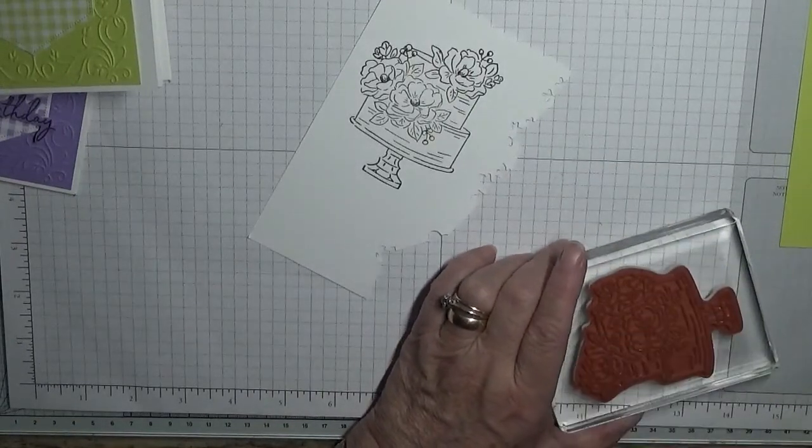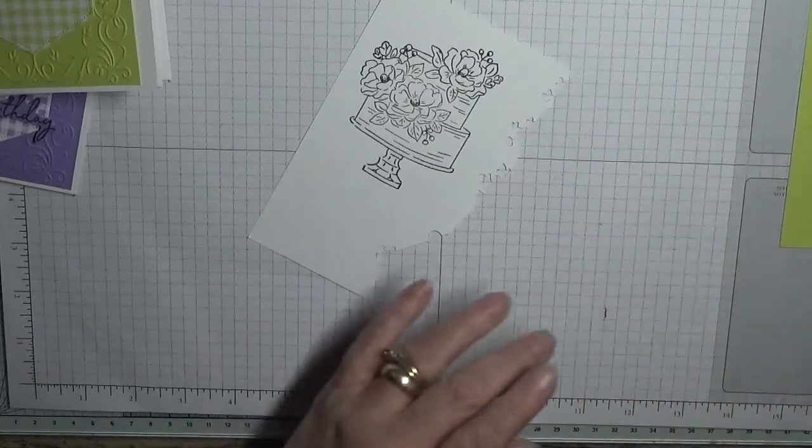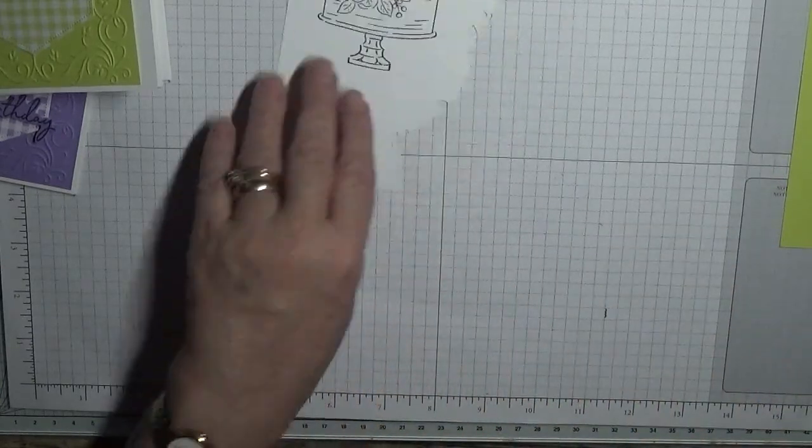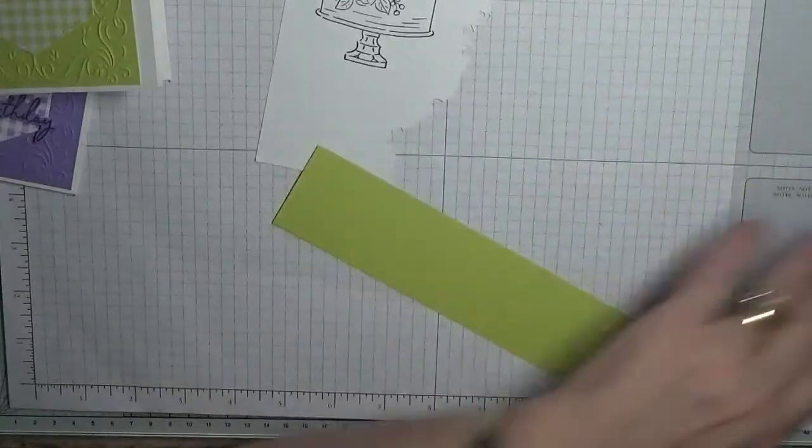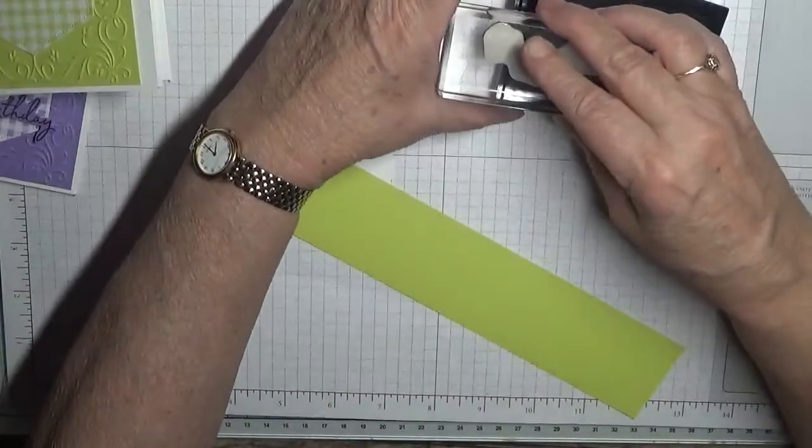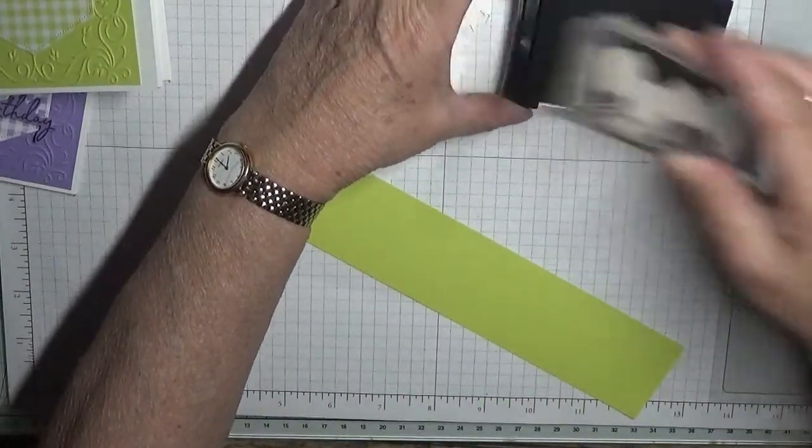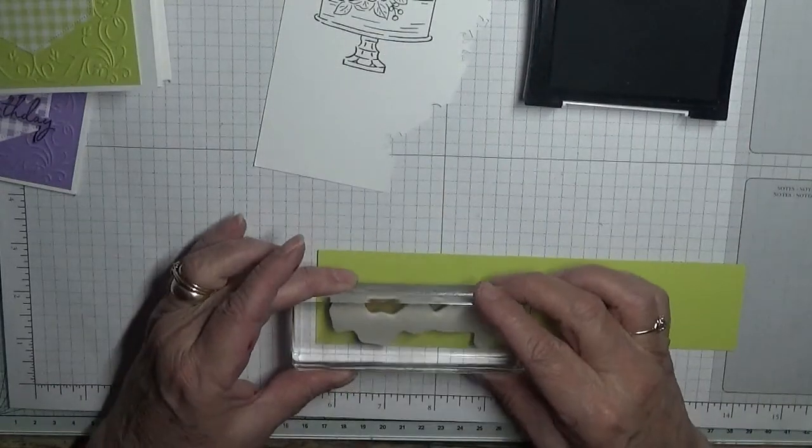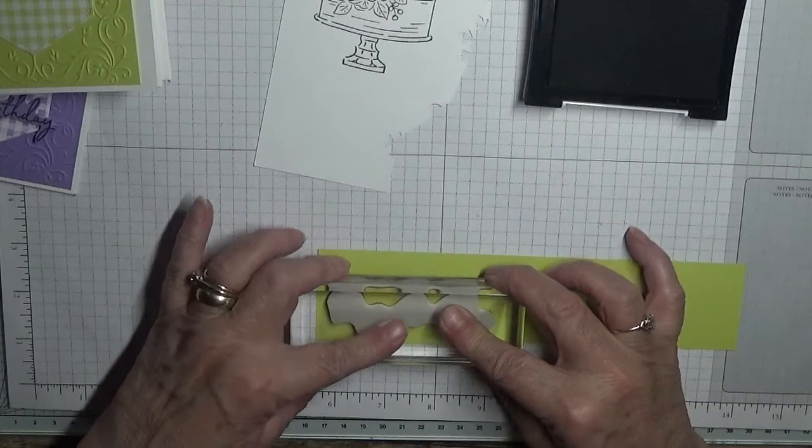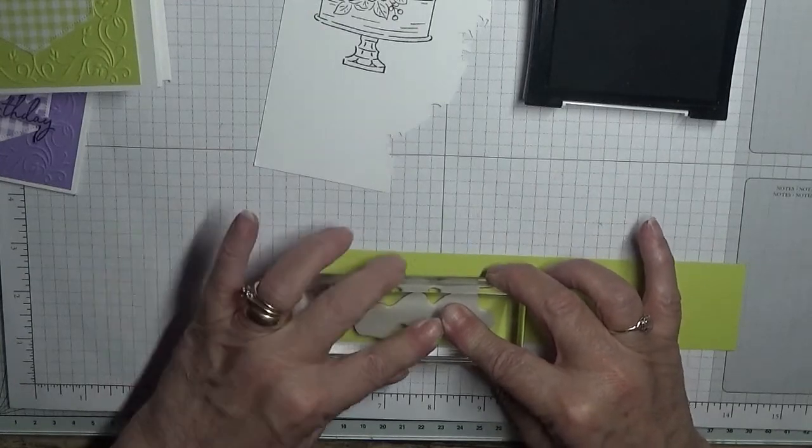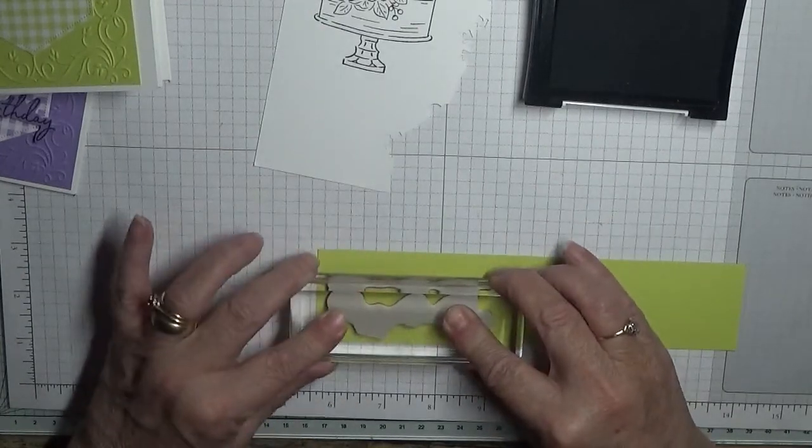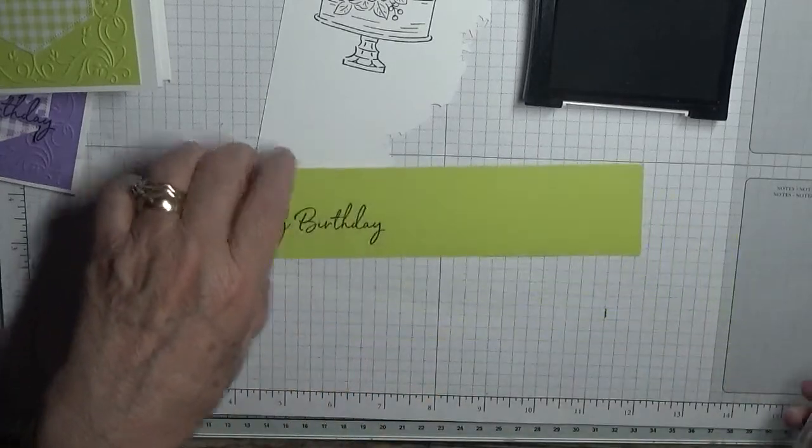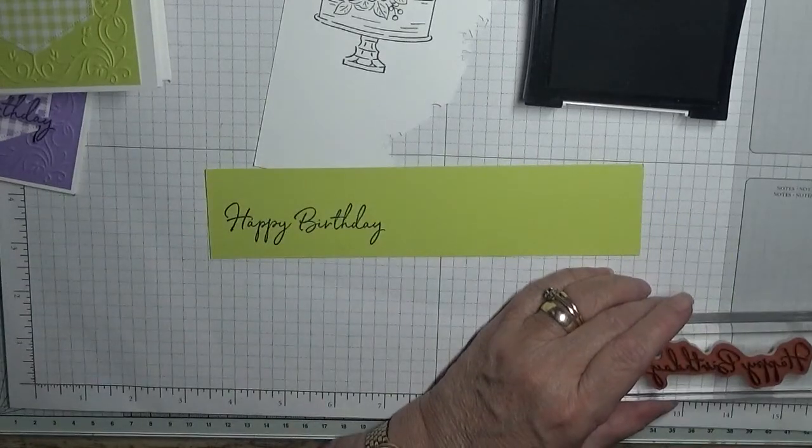More fussy cutting I'm afraid. Nice clean stamp. And then we want to do the happy birthday and we'll just stamp that down there and we're also going to cut that out by the shape of the words.